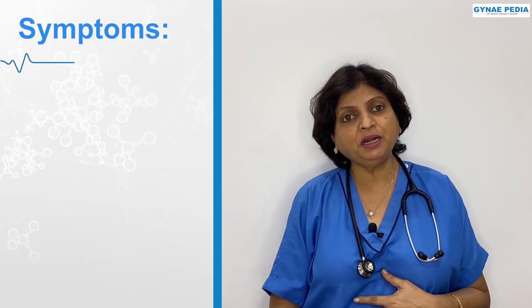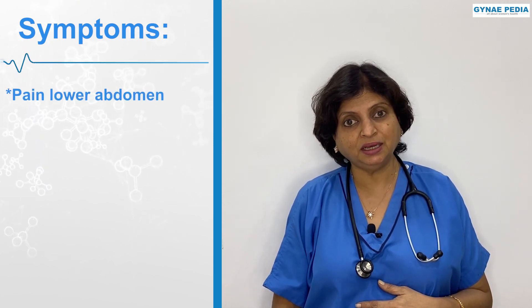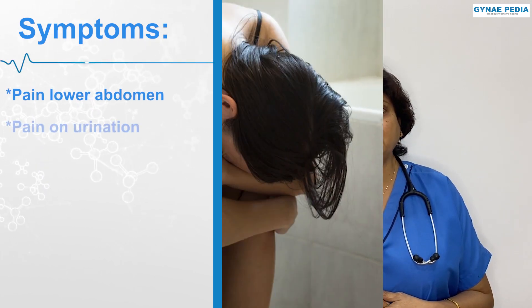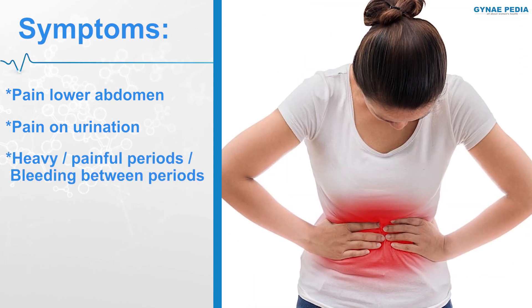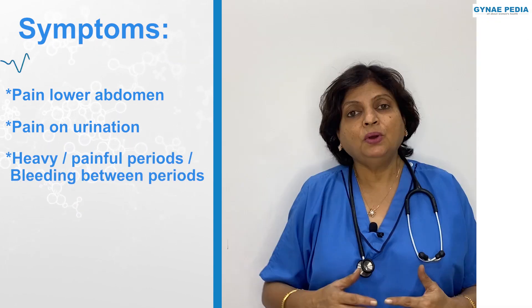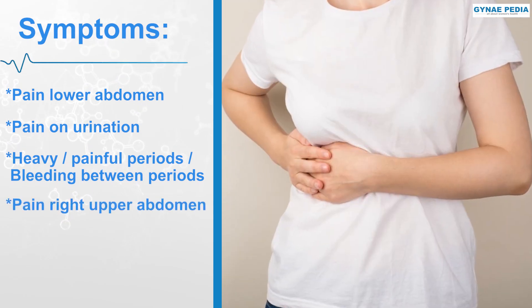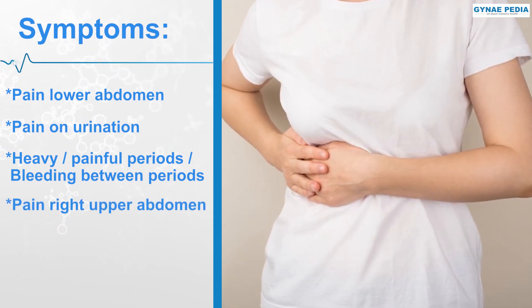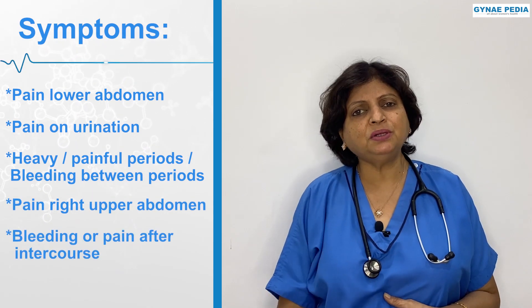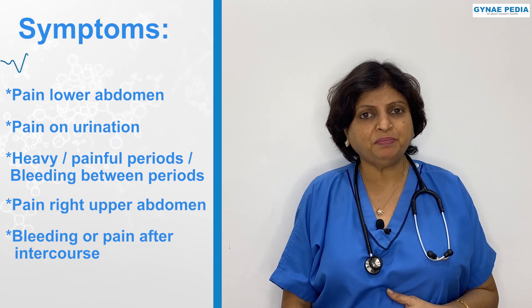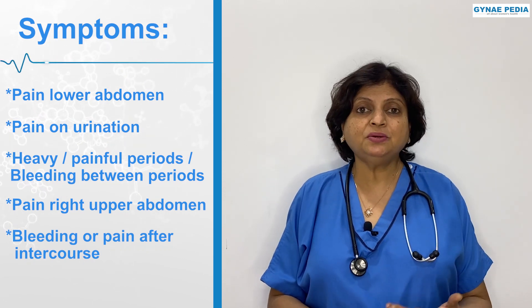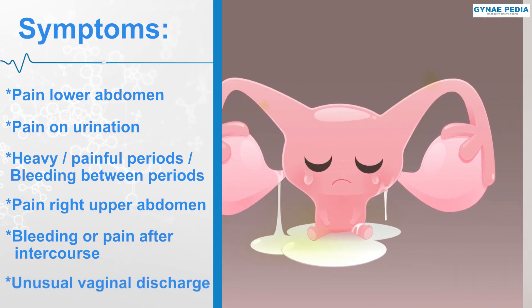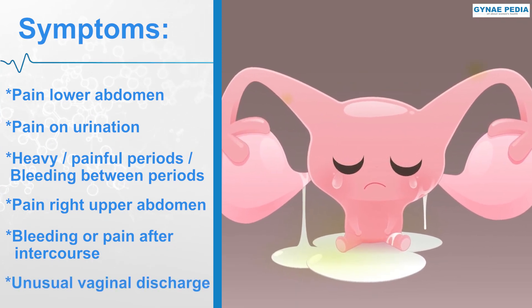Ladies can have pain in the lower abdomen, pain during urination, painful periods, pain in the right side, pain after sexual intercourse, or pain and discomfort deep in the pelvis. Some have low backache, and some have unusual vaginal discharge — creamy, yellowish, or greenish — which can sometimes be painful.